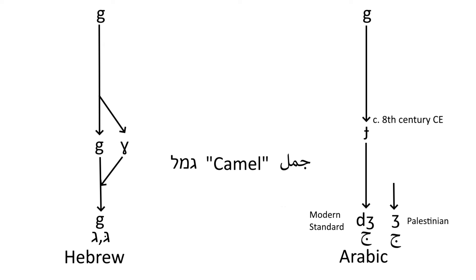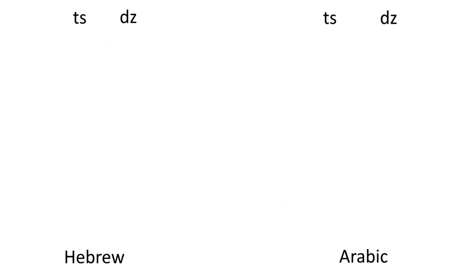Next, we move on to the sibilants, and boy did Proto-Semitic have plenty. First, Proto-Semitic had the affricates Ts and Dz, which both de-affricated in Hebrew and Arabic, becoming S and Z.